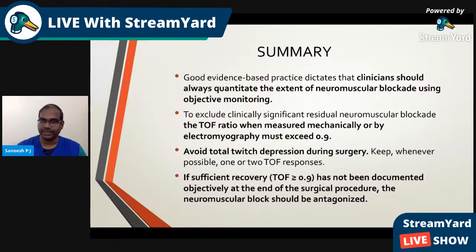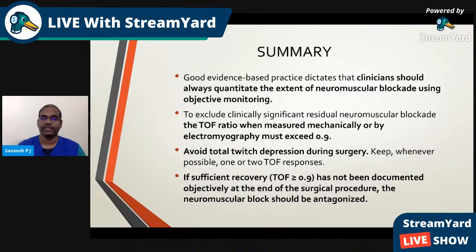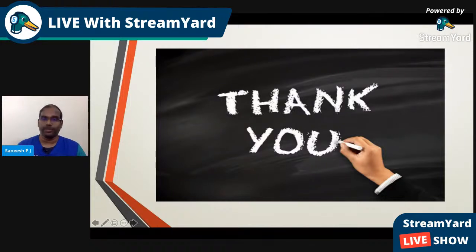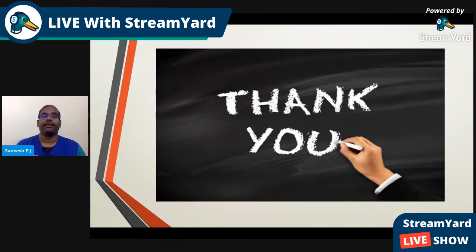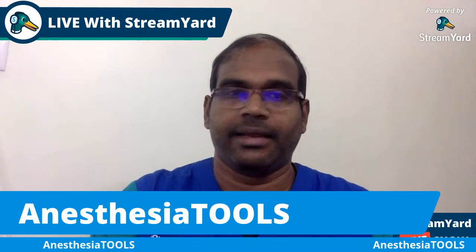Avoid total twitch depression during surgery. Keep, whenever possible, one or two TOF responses unless specifically indicated for the surgery. If sufficient recovery — that is, TOF ratio more than 0.9 — has not been documented objectively at the end of the surgical procedure, the neuromuscular block should be antagonized pharmacologically. This is in a nutshell regarding neuromuscular monitoring. It is good practice to include this in your post-induction monitors, which will help ensure you are attaining the desired depth of neuromuscular monitoring and avoid adverse effects such as laryngoscopy responses.